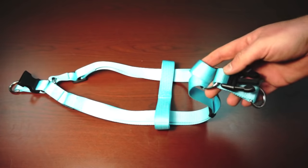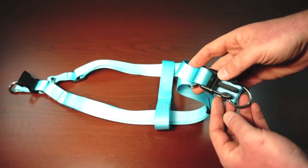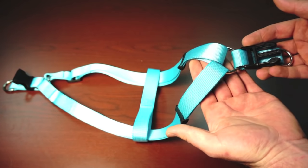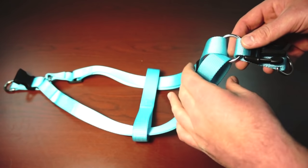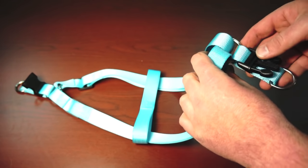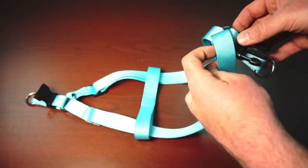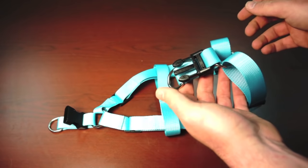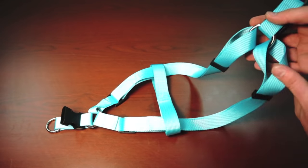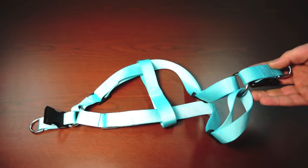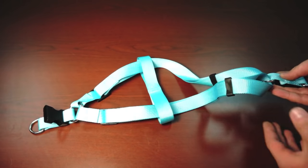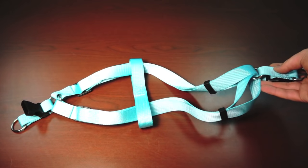One of the things that we think may be happening here is this ring and this buckle may be passing through this loop, which then, when you lay this out, results in the harness appearing to be twisted.